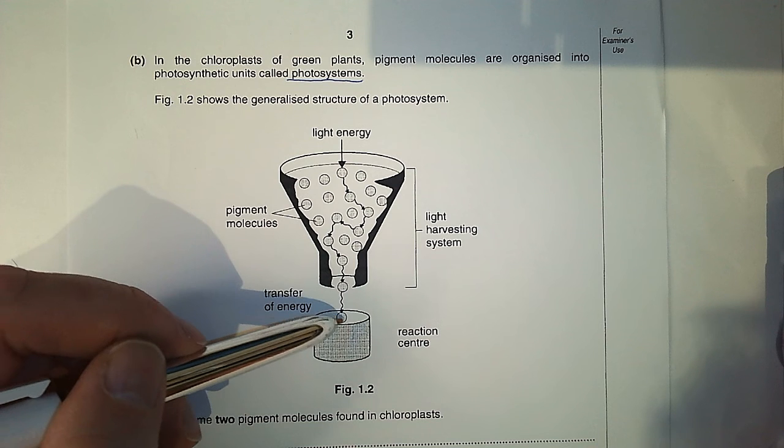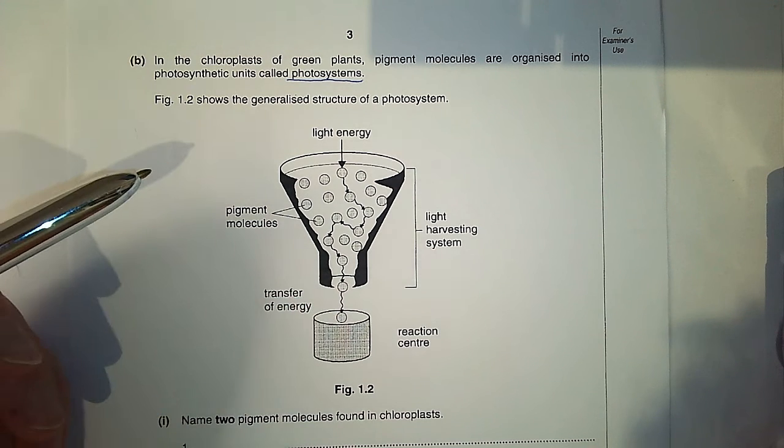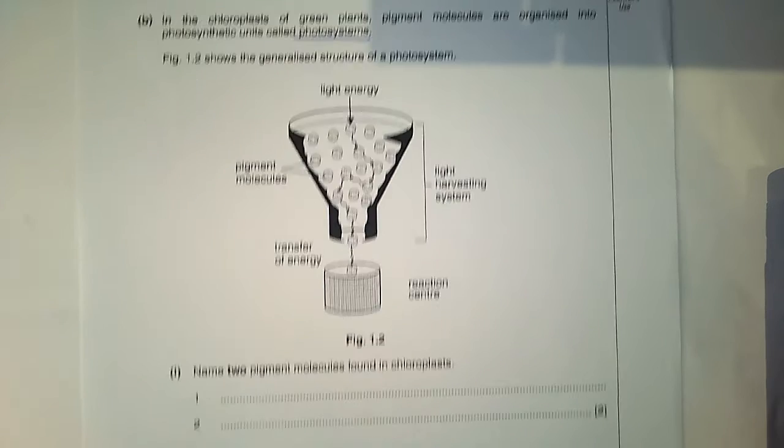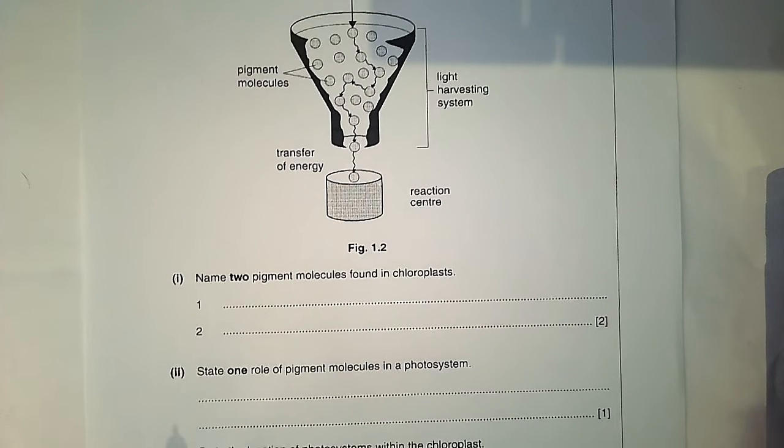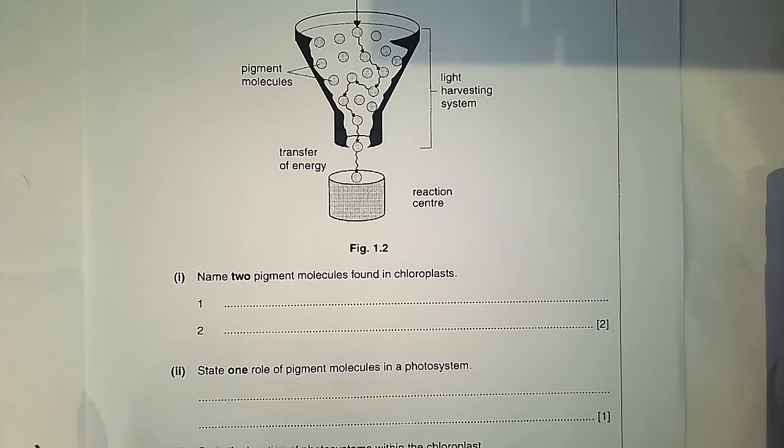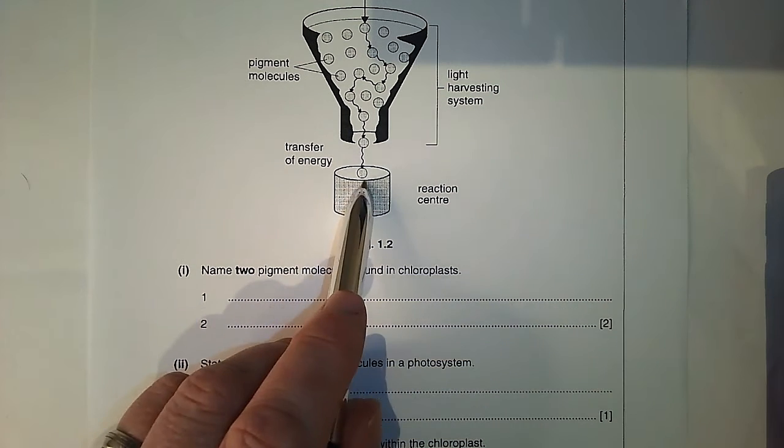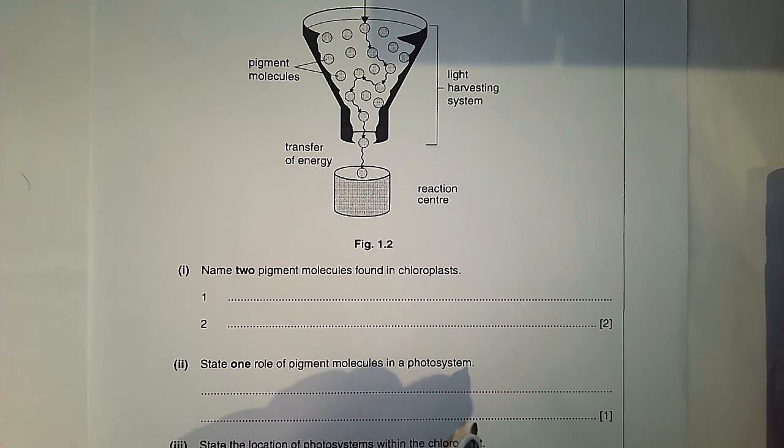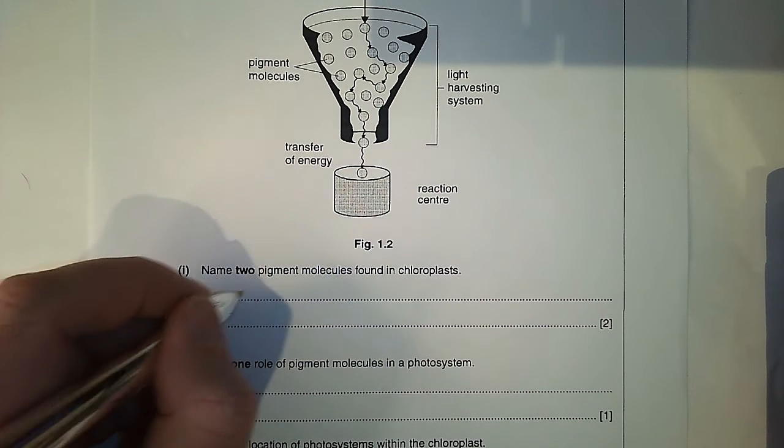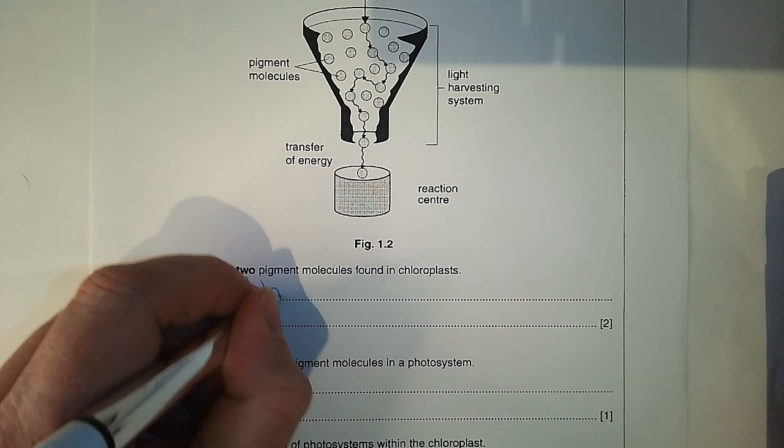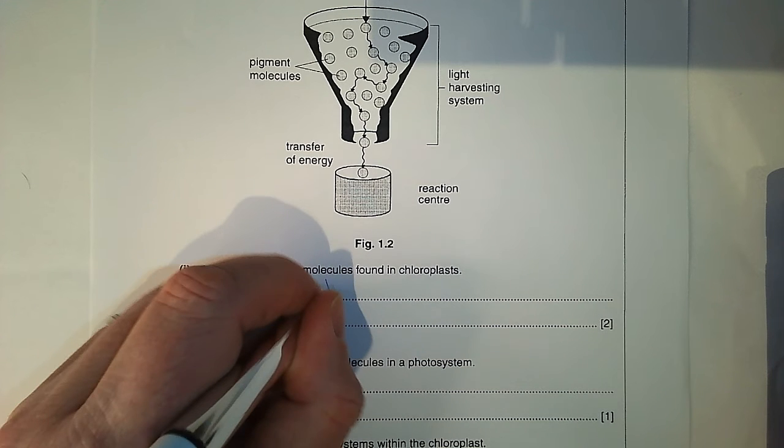You can see we've also got a pigment in the reaction center. The question says name two pigment molecules found in chloroplasts. So the main pigment molecule that's found in chloroplasts, which is in the reaction center, is chlorophyll a.